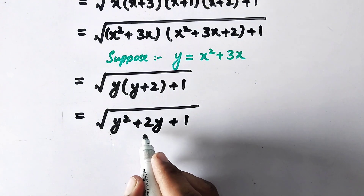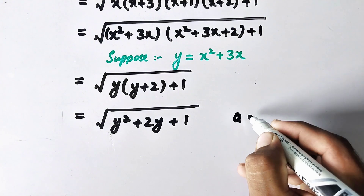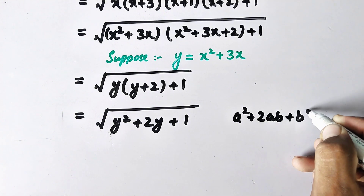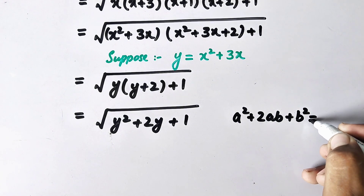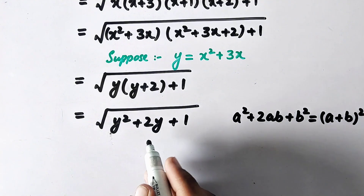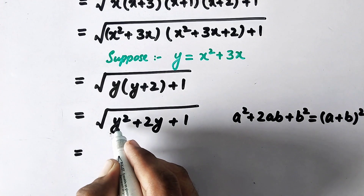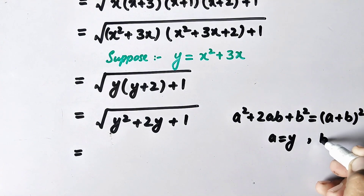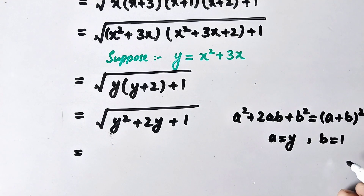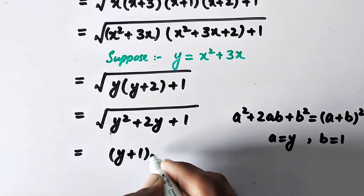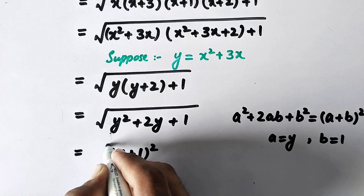As we can see, this is in the form of a squared plus 2ab plus b squared, which equals a plus b whole squared. Here a is y and b is 1, so this becomes the square root of y plus 1 whole squared.